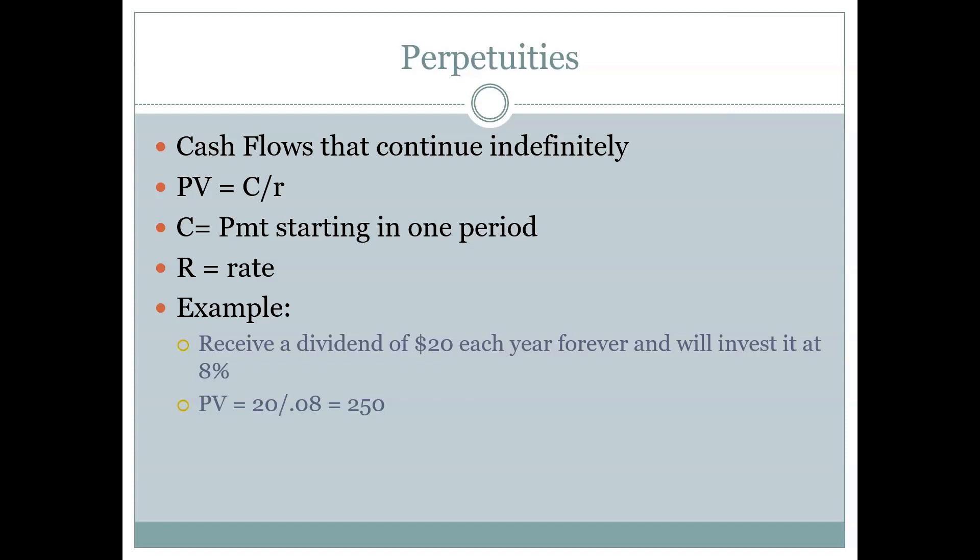After I die, my kids collect it; after they die, their kids collect it — that's what a perpetuity means. Notice there isn't a future value formula for a perpetuity. Think about why: it's because perpetuities don't end. There is no future value. The only thing we ever care about from a perpetuity is what the present value of all those infinite future cash flows is. This will come up again when we get to Chapter 8 and start talking about stocks.